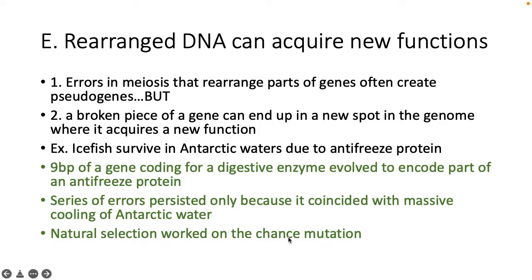Rearranged DNA can acquire new functions. Mistakes in meiosis can create pseudogenes, but a broken piece of a gene can end up in a new spot and pick up a new function. One example is ice fish surviving Antarctic waters due to an antifreeze protein — a nine-base-pair segment of a gene coding for a digestive enzyme evolved to encode part of an antifreeze protein through a series of errors. It persisted because of massive cooling in Antarctic waters, and natural selection worked on that chance mutation, resulting in a gene that took on a new job.